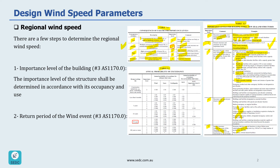Finally, looking at table 3.3, this table gives us the annual probability of exceedance for the event being considered — wind in this case — based on design working life, usually 50 years. With importance level two determined, we can see that wind has an annual probability of exceedance of 1 over 500, meaning a return period of 500 years. Other examples include snow at 1 over 150, earthquake at 1 over 500, and serviceability limit state at 1 over 25 (25-year return period).